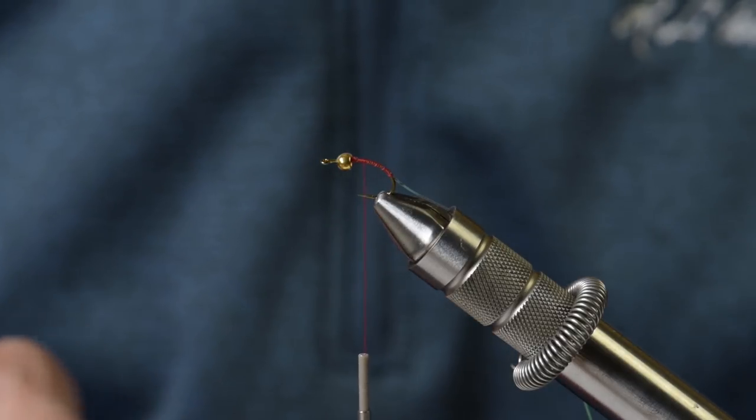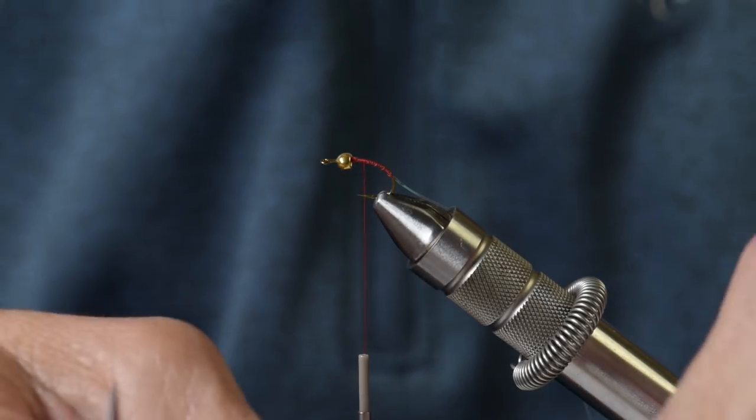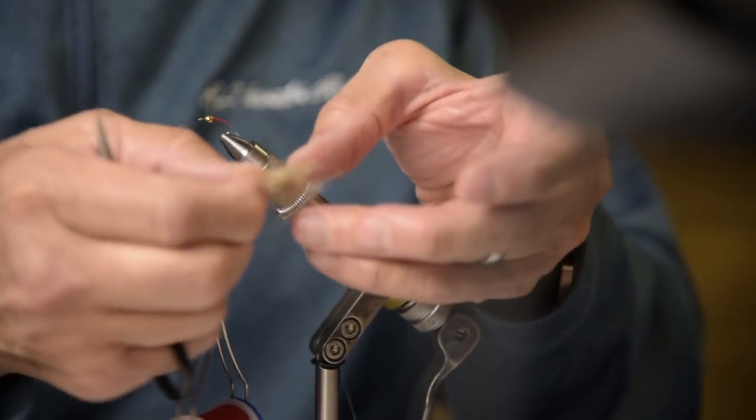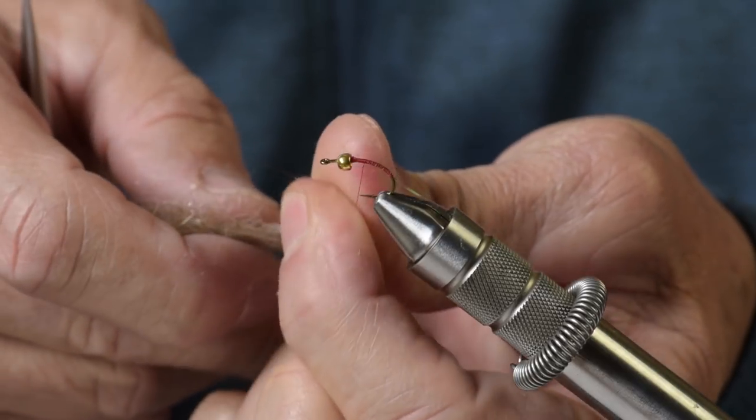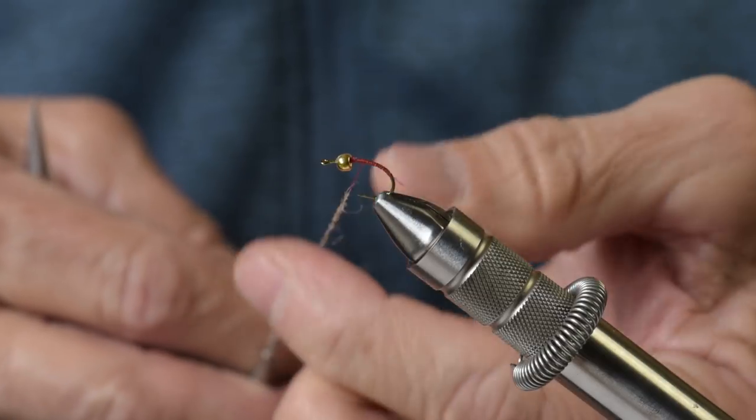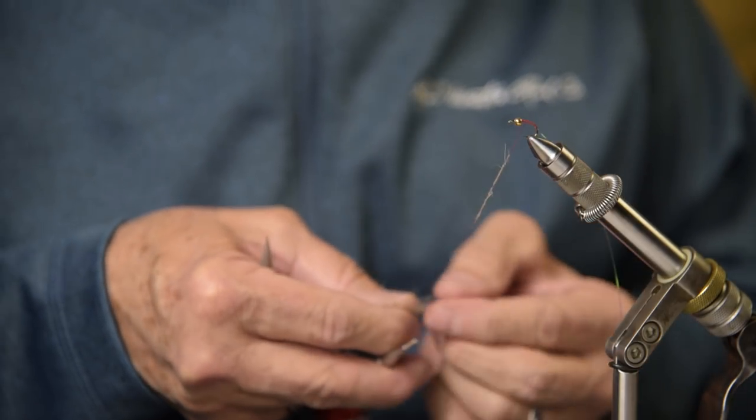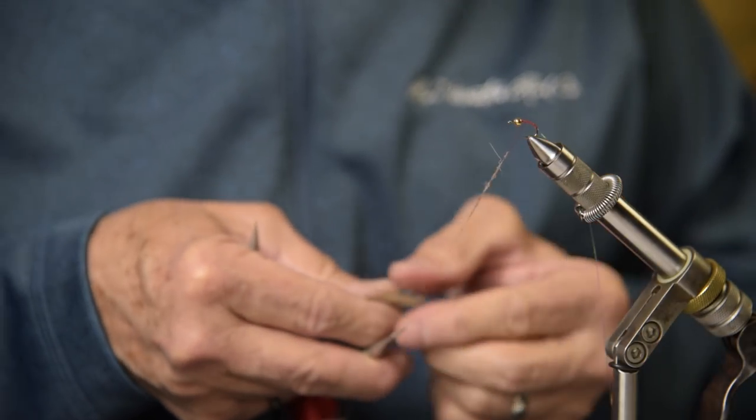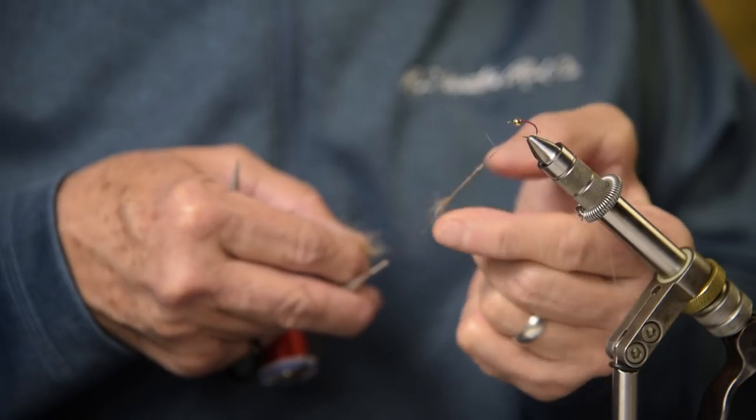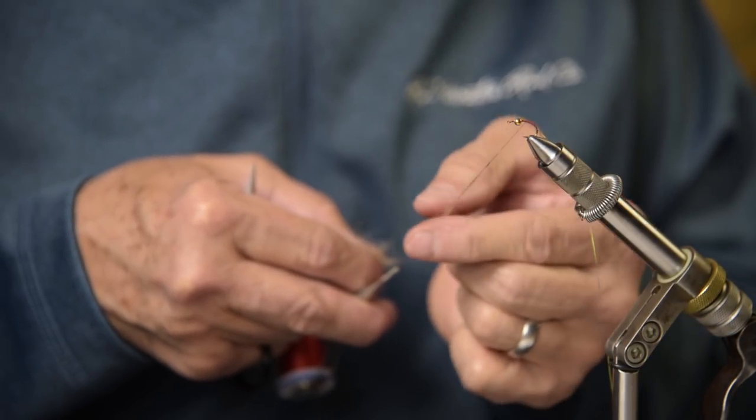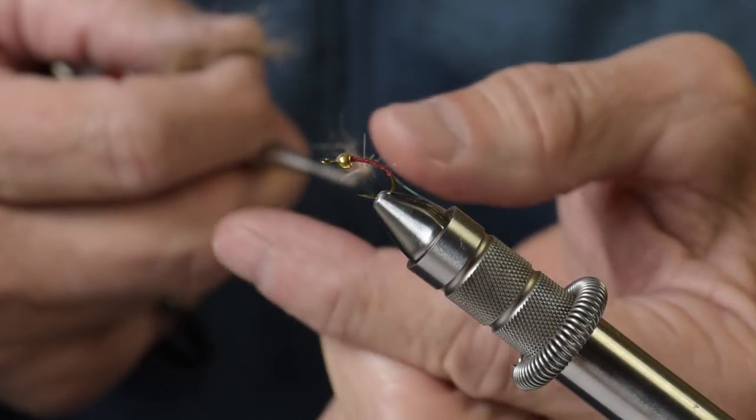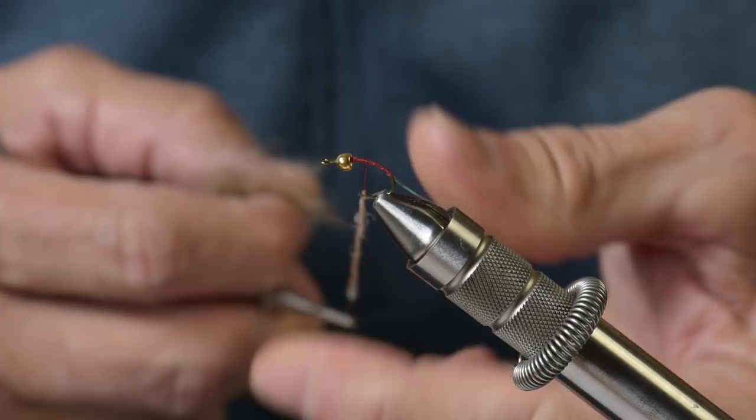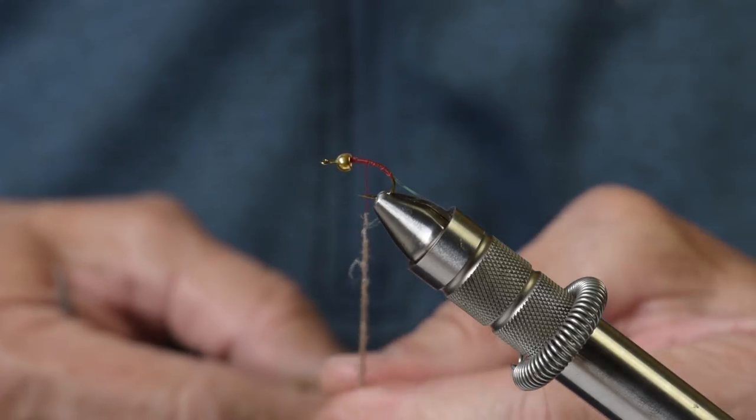Then I can start applying some dubbing. The dubbing for this fly is rabbit, and as you know from looking at previous videos, I always kind of prep my dubbing where I'll pull and stack, kind of get everything going in the right direction, and it's just going to be a little bit easier to get this dubbing on the thread. I'm going to make about a six inch long little noodle here.